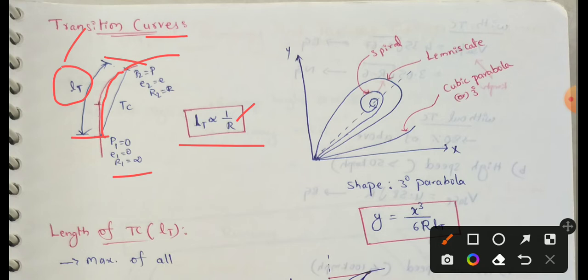Here we have three types of curves. This curve is cubic parabola or third degree parabola. Next, this curve is lemniscate. Next, this curve is the inner side of the spiral. This is the spiral curve.